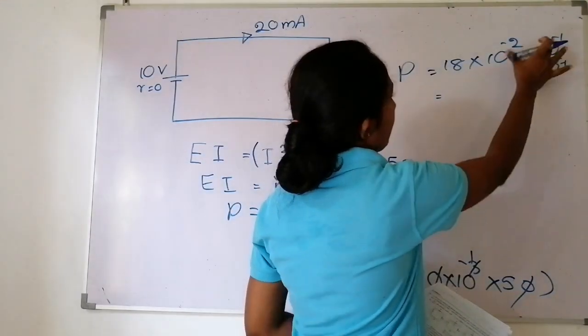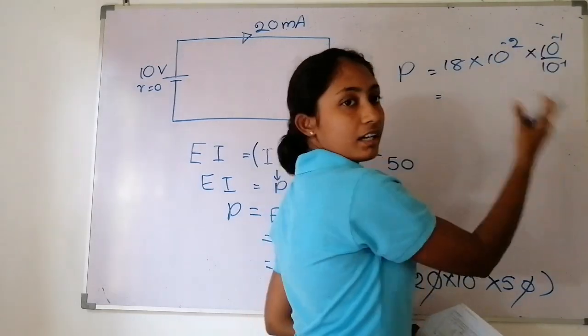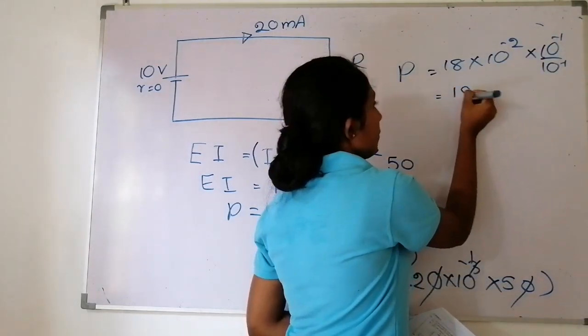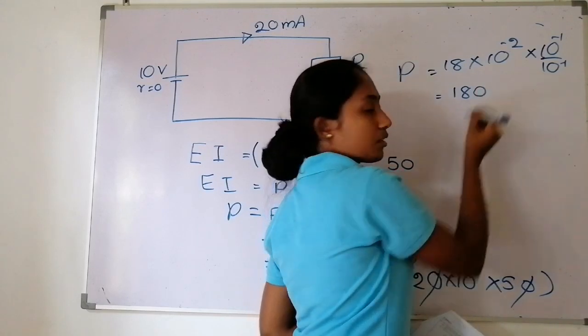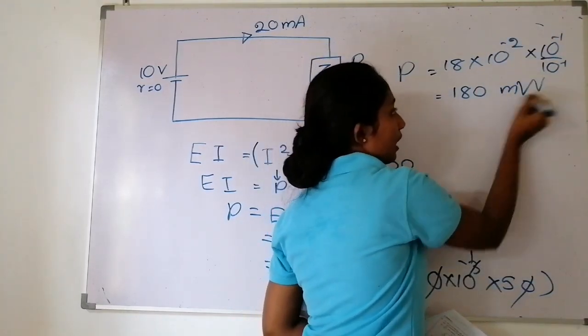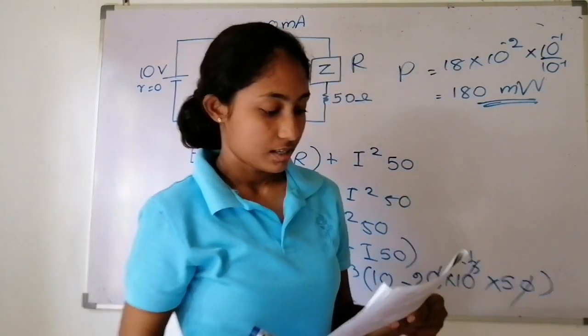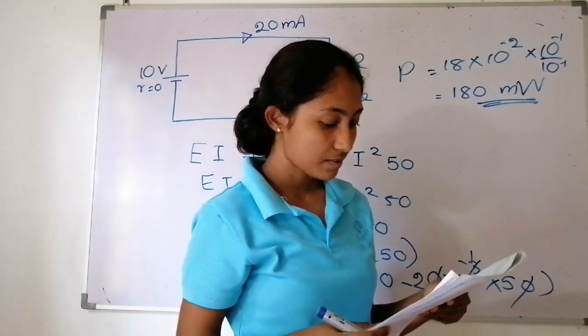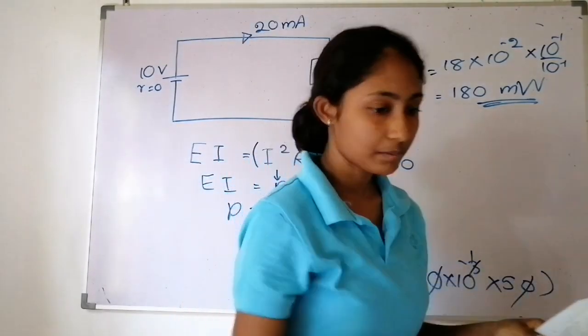Now for the power calculation, we use P equals I squared times R to find the power dissipated in the resistor.